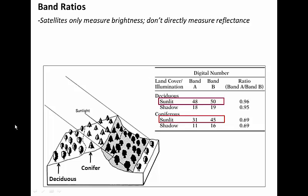So let's work through a quick example here. Consider a surface that has two different types of trees. It's got deciduous trees and conifer trees. And we'd like to distinguish those from each other spectrally. If they're both getting the same amount of incoming sunlight, then we're going to measure a brightness of 48 on band A and 50 on band B for the deciduous trees. But the conifers are a bit darker. So we're going to measure 31 and 45 respectively. So now if everything is sunlit, then we can tell these apart because the conifers are going to be darker.